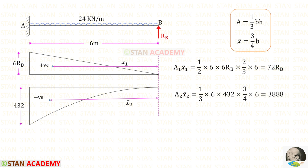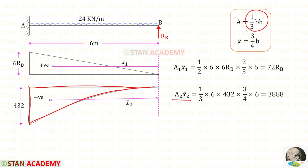Now let us find area 2 times x2-bar. We know that it is a second degree parabola. The area formula is 1/3 times base times height, and the centroid distance about the right side is 3/4 times the base. Using these formulas, we get 3888.